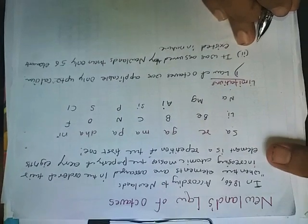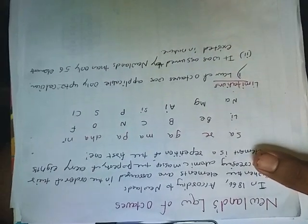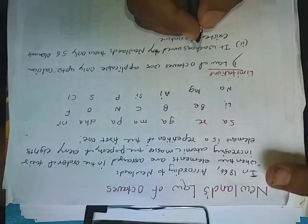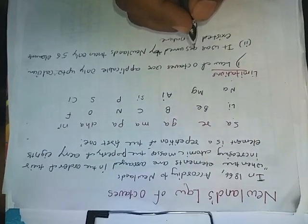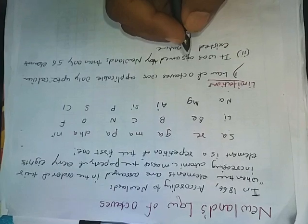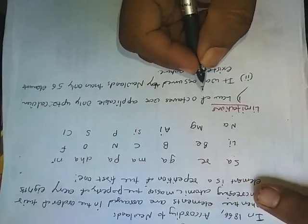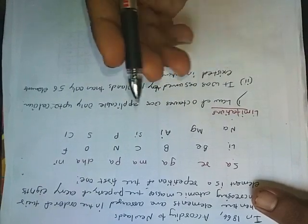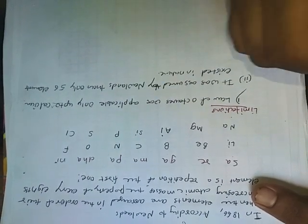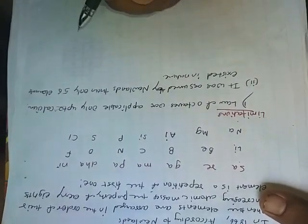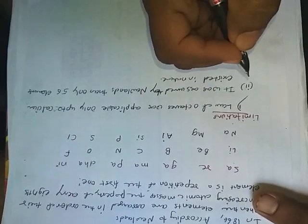In order to fit elements into his table, Newland adjusted two elements in the same slot but also put some unlike elements under the same note. For example, cobalt and nickel are in the same slot, and these are placed in the same column as fluorine, chlorine, and bromine, which have very different properties.